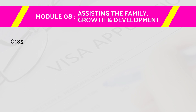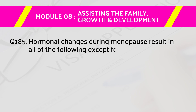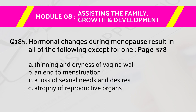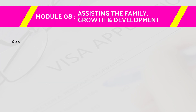Question number 185: Hormonal changes during menopause result in all of the following except one — page number 378. Answers are: A) thinning and dryness of vaginal wall, B) end of menstruation, C) a loss of sexual needs and desires, D) atrophy of reproductive organs. The right answer is C, a loss of sexual needs and desires.